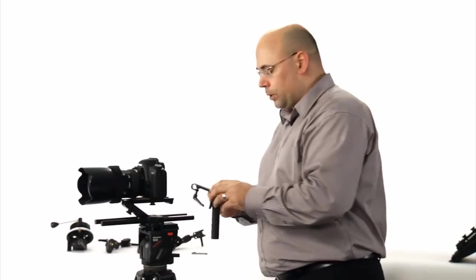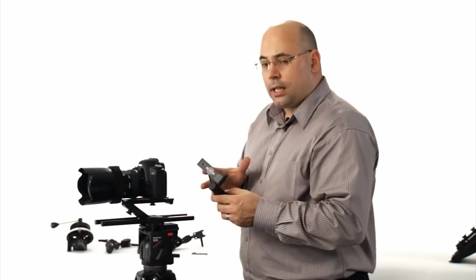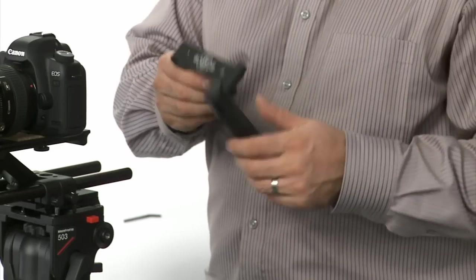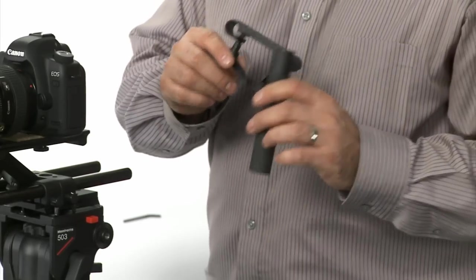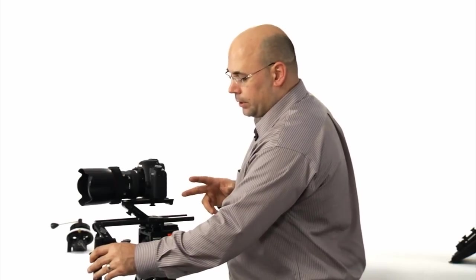And if you've got one of our older grips, these are a different design. They're aluminum, and they use, again, the kip handles, and they're designed to clamp on here. And they're designed to clamp on very, very tightly.